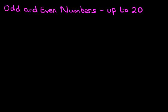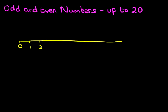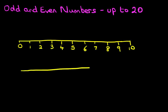Now the best way to explain this is with the number line. We're going to draw two number lines here. There's our first one — this one is going to go from 0 to 5, 6, 7, 8, 9, and 10. And we're going to draw a second one over here, beginning at 10 and going up to 20.